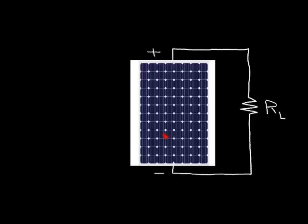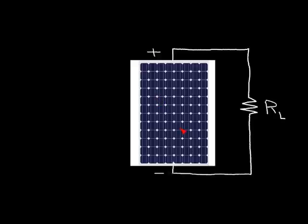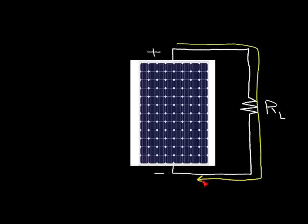In this video I want to explain the electronics of solar panel shading and solar panel hot spots. In this picture we have a typical solar panel with a lot of individual cells connected in series. We have a plus terminal, a minus terminal, and a load resistor across the panel called RL. Each solar cell is receiving bright sunlight, so we have current flowing from plus to minus through this load resistor. I'm going to use the convention of positive current — electrons actually flow the opposite direction, but it doesn't really matter.